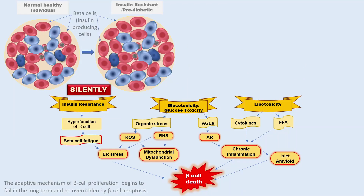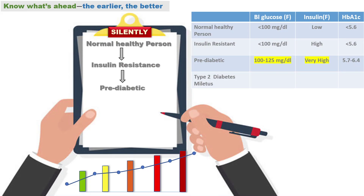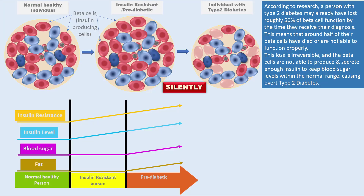If the person does not change his lifestyle over the years, insulin resistance, high levels of glucose, and fat continue to damage insulin-producing beta cells. Gradually, a stage comes when the leftover beta cells are not in a position to produce sufficient insulin to keep blood sugar levels in a safe, normal, healthy range. Blood sugar begins to rise — this is the stage of overt diabetes. According to research, a person with type 2 diabetes may already have lost roughly 50% of the beta cells by the time they receive their diagnosis.